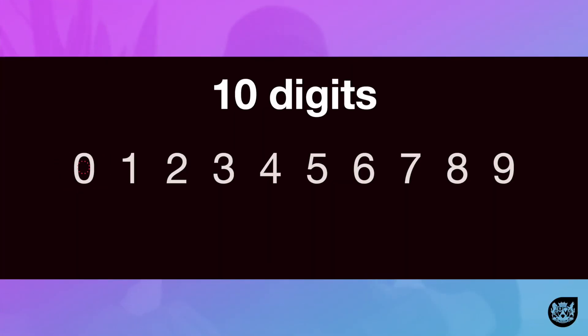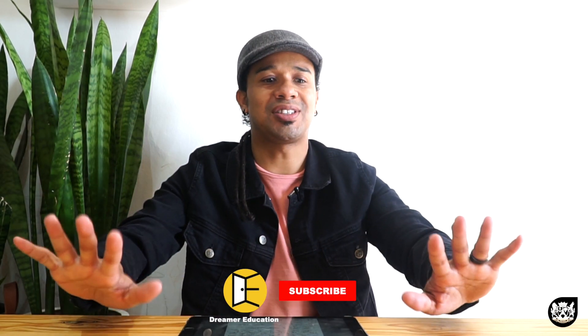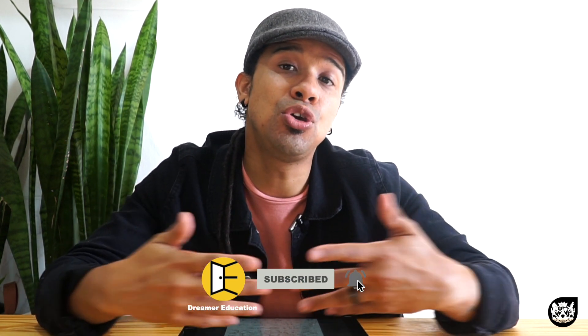Those digits are 0, 1, 2, 3, 4, 5, 6, 7, 8, 9 — that's 10 digits. And the wonderful part about these 10 digits is they can be used to create any number.